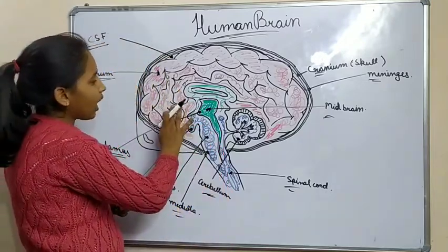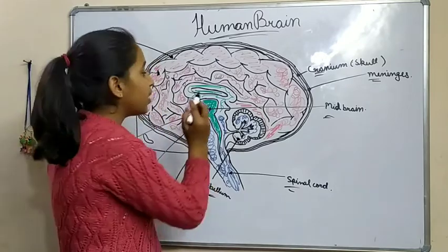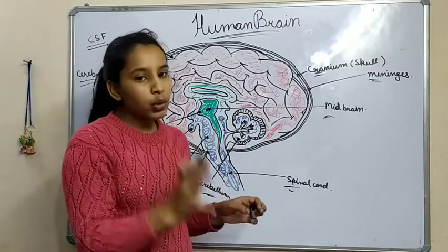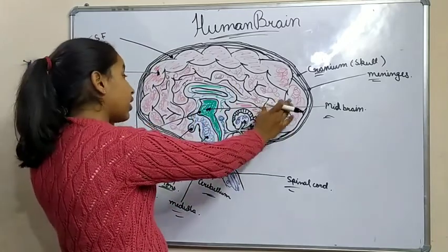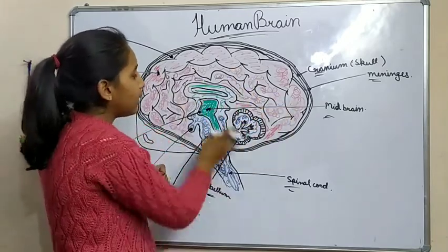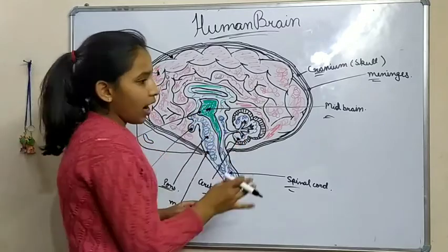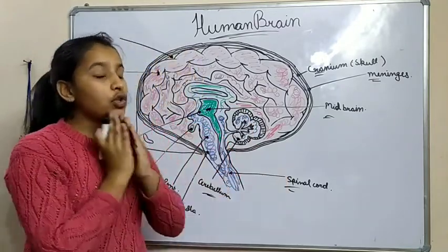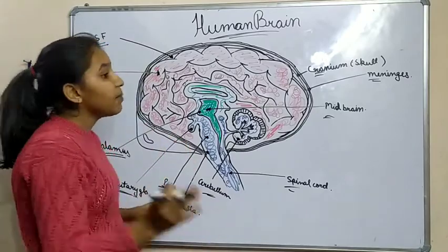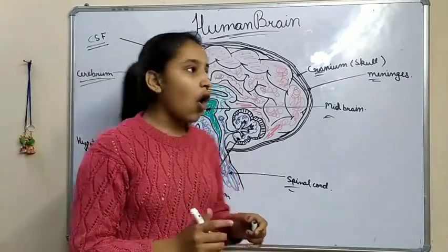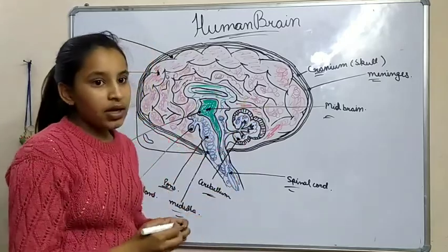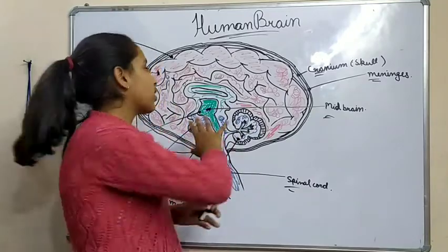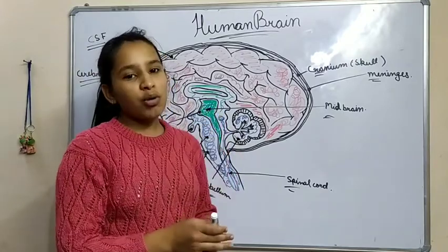First, the forebrain. The forebrain also has three parts: thalamus, limbic system, and cerebrum. Cerebrum covers most of the brain, meaning cerebrum is present in the largest amount in our brain.